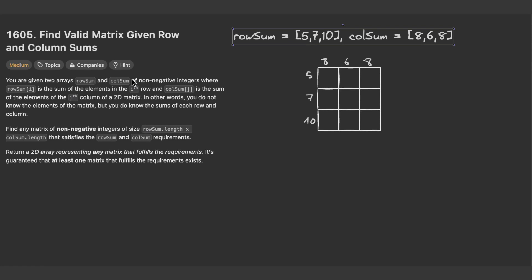Hello guys and welcome back. Let's solve a new LeetCode problem. Today's problem is to find a valid matrix given row and column sums. You are given two arrays, row sums and column sums, of non-negative integers, where row sum of i is the sum of the elements at the i-th row, and column sum of j is the sum of the elements of the j-th column of a 2D matrix.